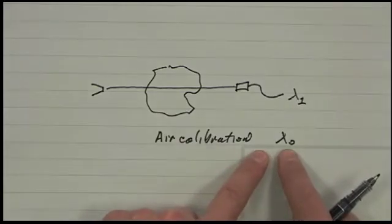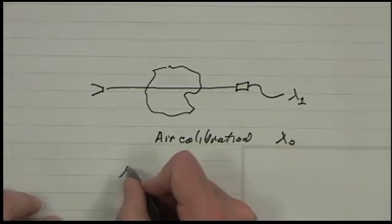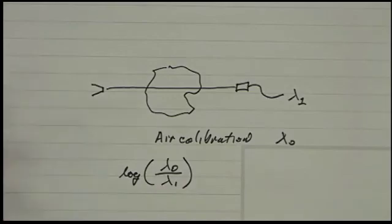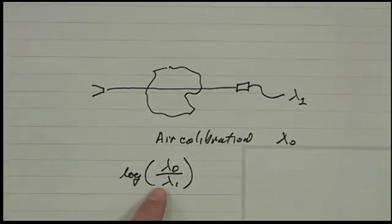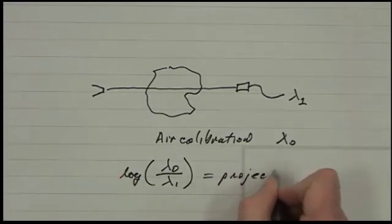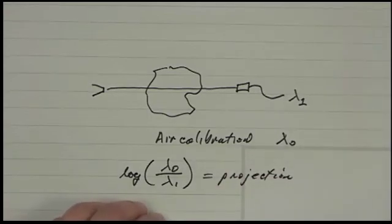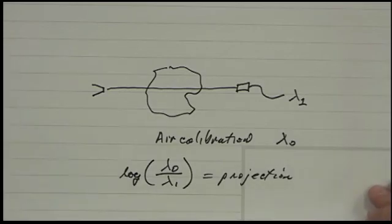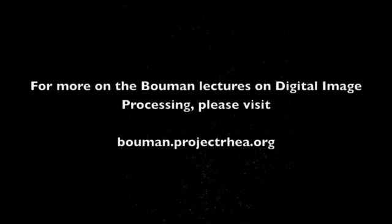And then what you do is you make the measurement lambda when there's something in the system. They do this in the morning before you get there. So in the morning when the technician arrives to work, the first thing they do is they calibrate the system in the morning before they start up, if they're doing the right thing. Then what they do is they take the log of lambda zero over lambda one. This is a positive number. And the log, so that's going to be positive. And that's your projection. So that's the physical measurement that you make. Now, once you have the physical measurement, now we still have the problem that we have to actually invert it.